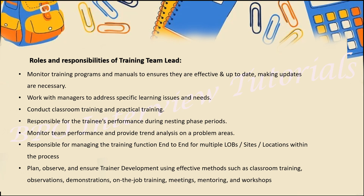The next point is: monitor team performance and provide analysis on problem areas. Also, responsible for managing training functions end-to-end across multiple LOBs, sites, and locations within the process. Just as an operations team leader manages a headcount — for example, 25 per team leader — the Training Team Leader also has a certain headcount, workflows, and sites to cover, as decided by management.